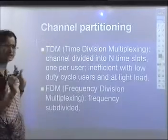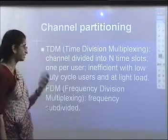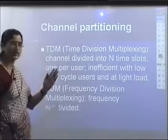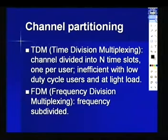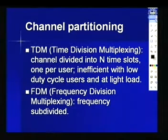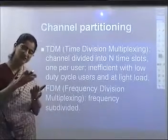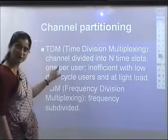Channel partitioning can be done by time or frequency. In Time Division Multiplexing (TDMA), the transmission time is divided into N time slots — one slot per user per round. The problem is inefficiency with low duty cycle users or light load: if a node doesn't transmit for the full duration of its allocated slot, nobody else can use it, so that resource is wasted.